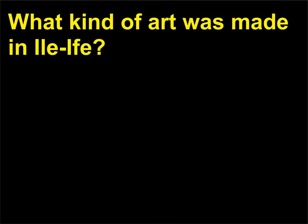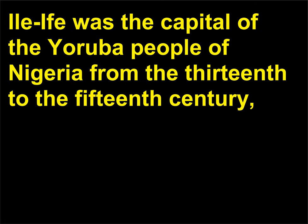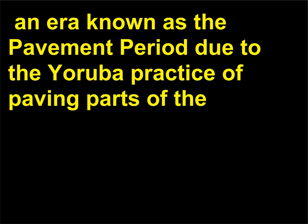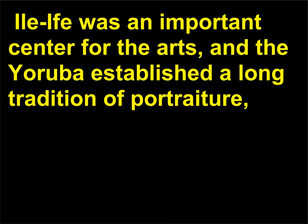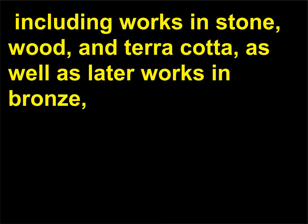What kind of art was made in Ife? Ife was the capital of the Yoruba people of Nigeria from the 13th to the 15th century, an era known as the Pavement Period due to the Yoruba practice of paving parts of the city with rectangular rows of stone and pottery fragments laid out in a herringbone pattern. Ife was an important center for the arts, and the Yoruba established a long tradition of portraiture including works in stone, wood, and terracotta, as well as later works in bronze, brass, and other metal alloys made using the lost-wax casting method.